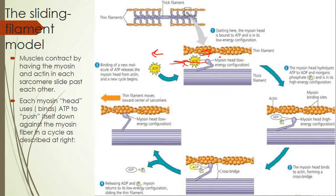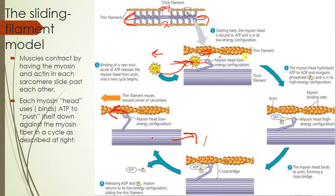Then ADP is released from myosin, and myosin returns to its low-energy configuration — in doing so, it slides down the actin filament, pushing against it and closing the gap. It then resets by binding a new ATP. This cycle occurs over and over again: using ATP, attaching to actin via the crossbridge, losing ADP, pushing down the actin filament, and resetting by rebinding ATP.